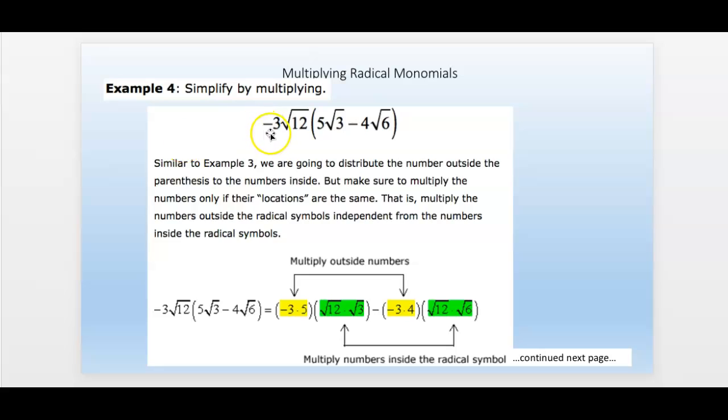Example 4. A little harder here, because these have coefficients in front of each radical, but it's similar. You multiply the outside numbers together, so negative 3 times the 5. Then negative 3 times the 4.